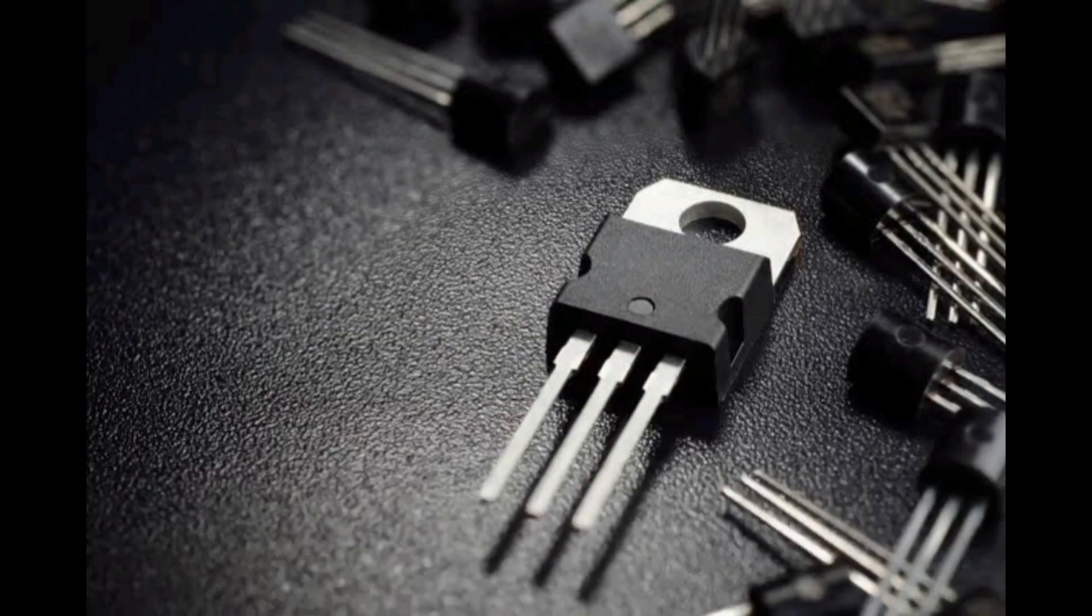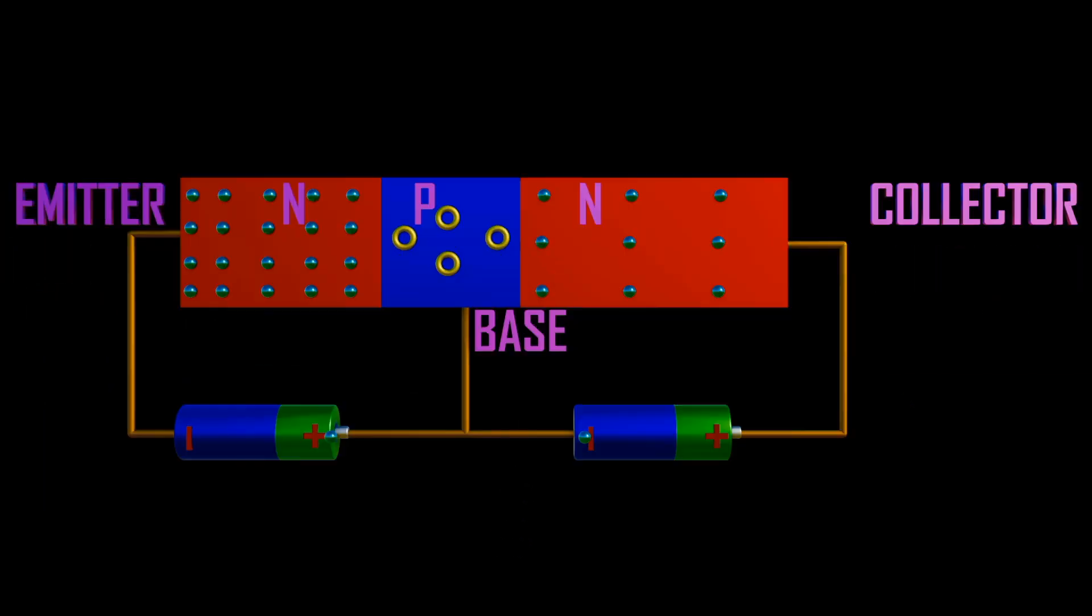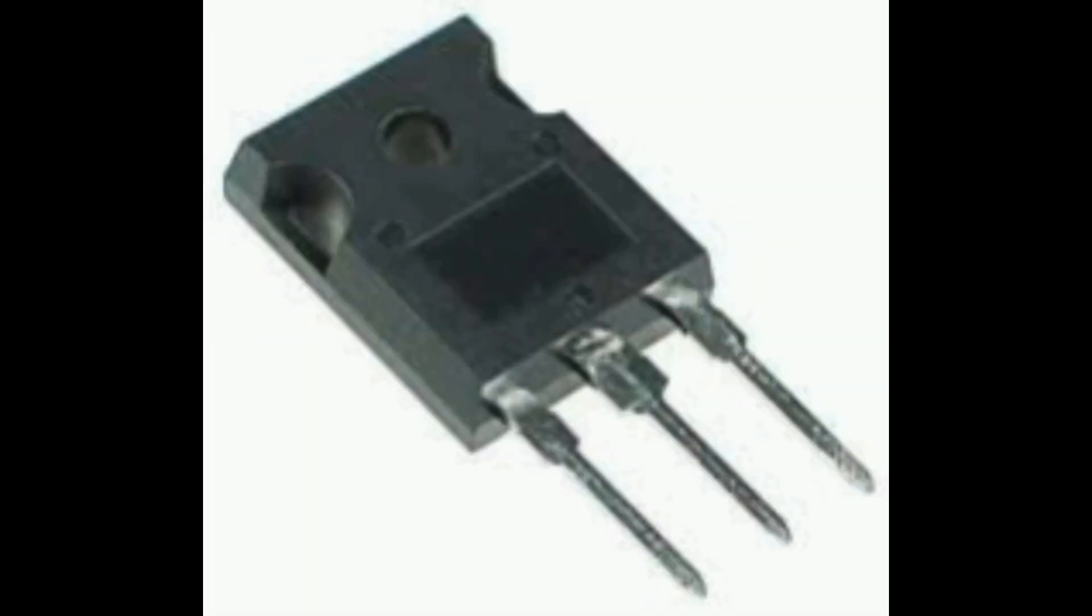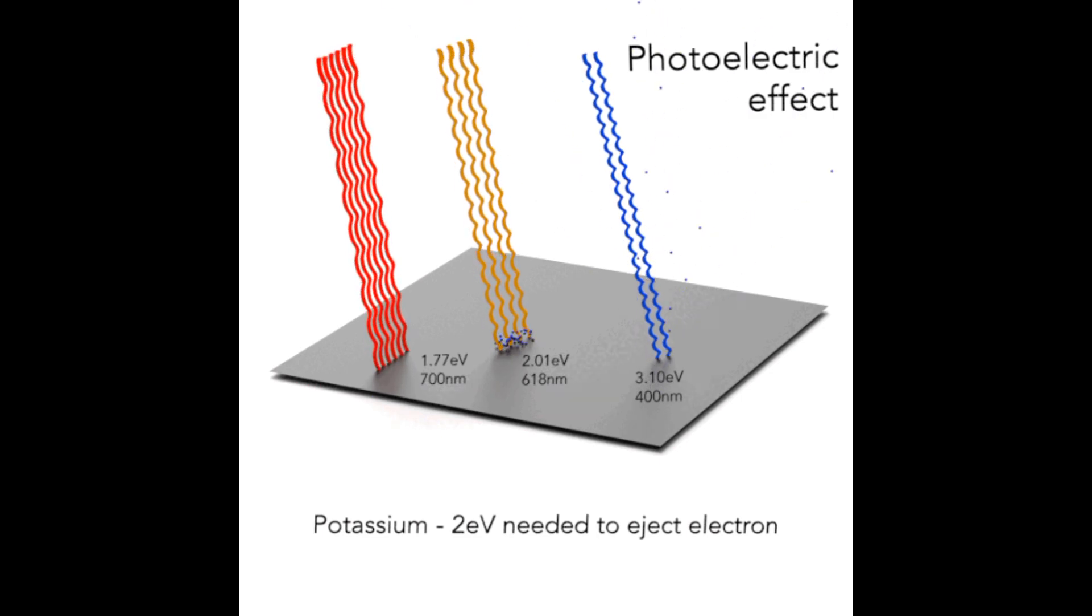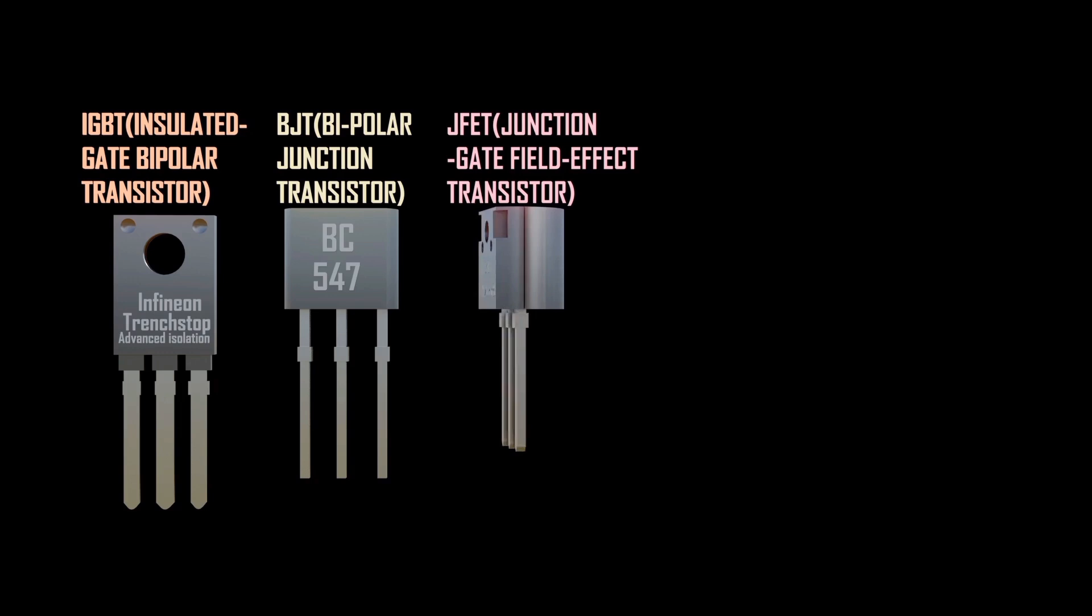The transistors come in different types: P-N-P, N-P-N, Darlington pair transistor, high frequency transistor, power transistor, and phototransistor. But these transistors have been categorized under IGBT, BJT, JFET, MOSFET, and UJT.